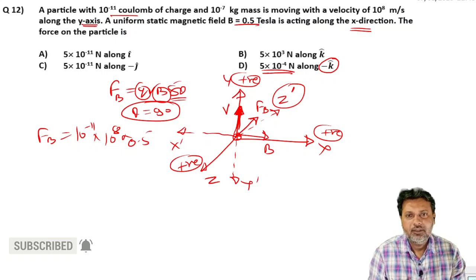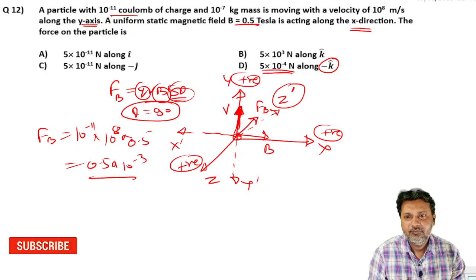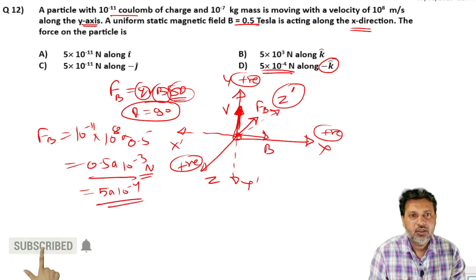To final value kya ho gaya? Point 5 into 10 to the power minus 3 Newton. Yeh answer correct hai. 5 into 10 to the power minus 4 Newton, theek hai.